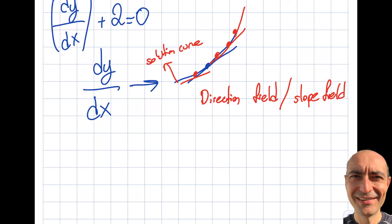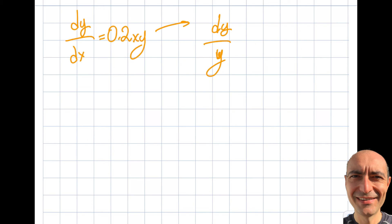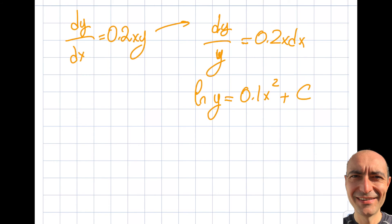The example is dy/dx = 0.2xy. This is applicable to solution curves, but I actually do have a solution for this. Using separation of variables: I move y to one side and dx to the other to get dy/y = 0.2x dx. Taking the integral of both sides gives ln|y| = 0.1x² + c, since 0.2 divided by 2 is 0.1.